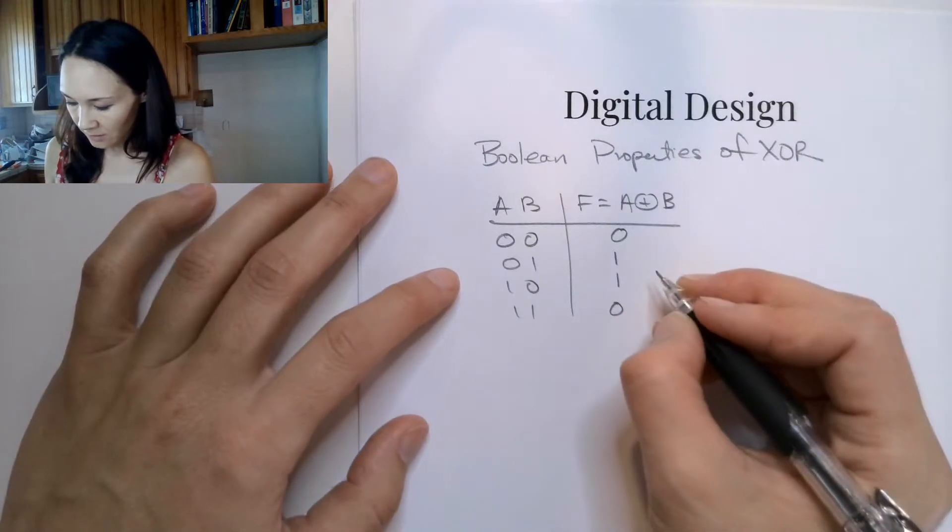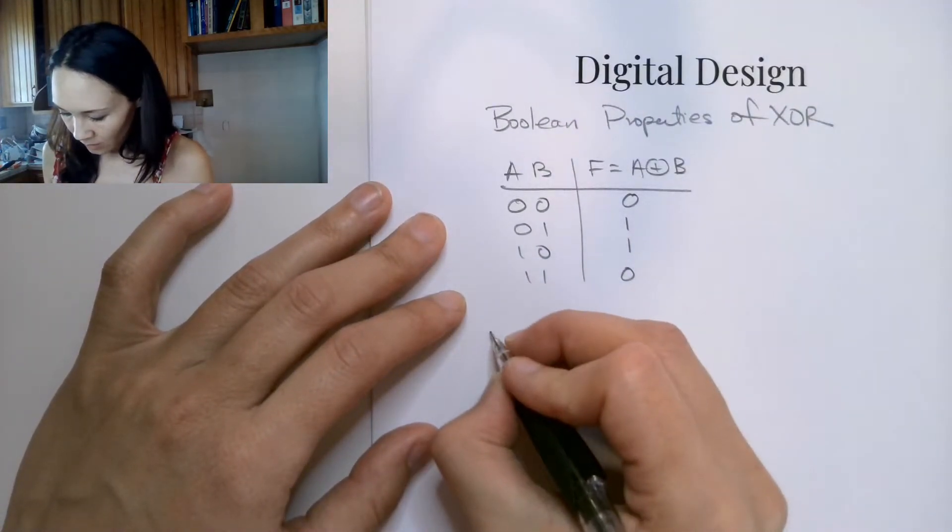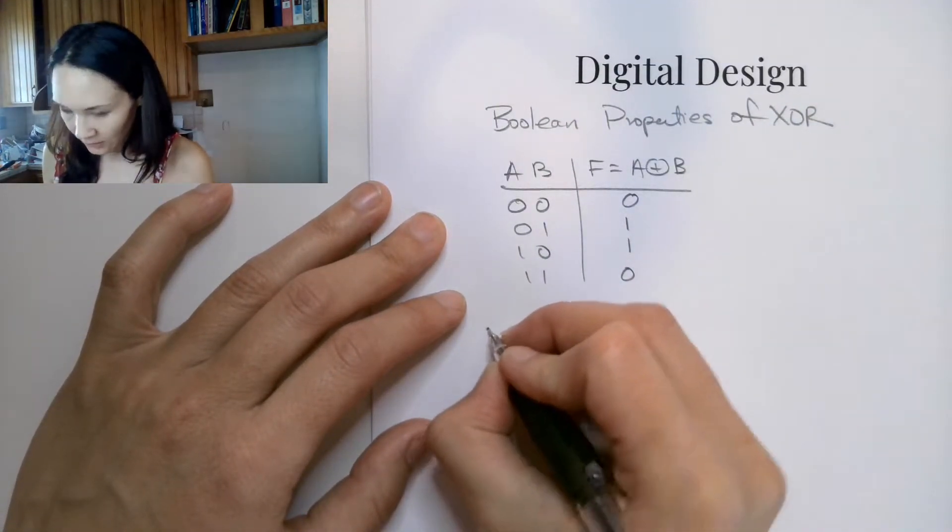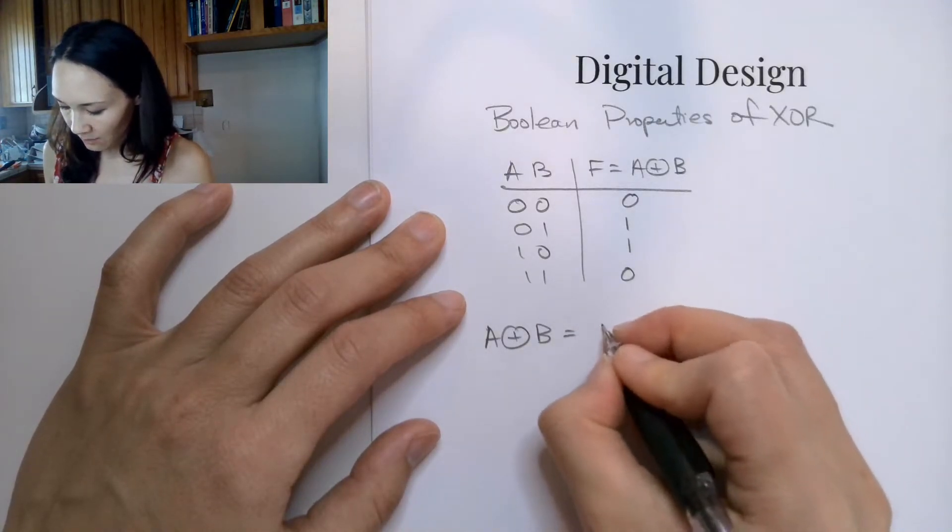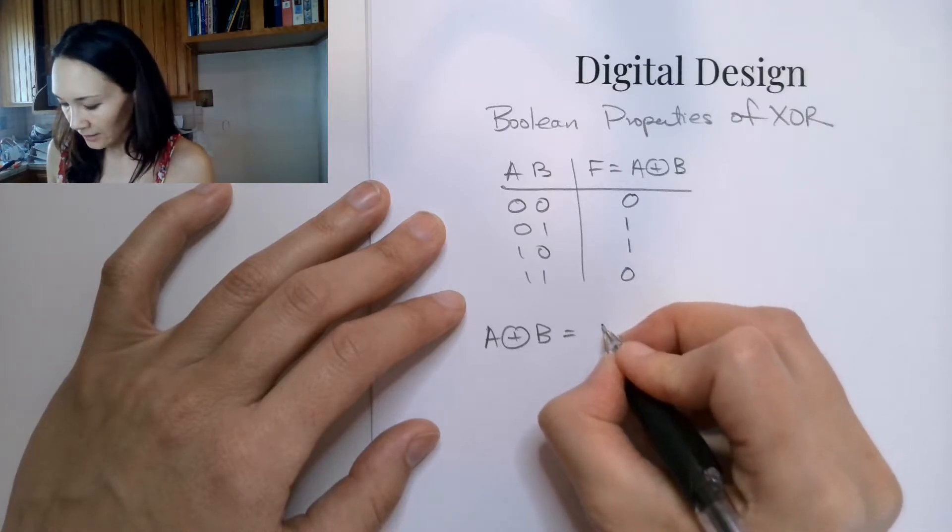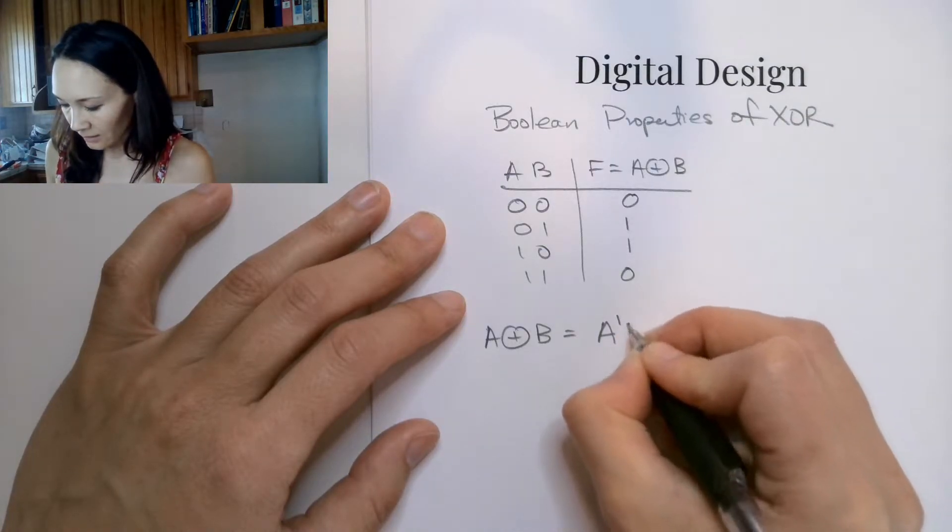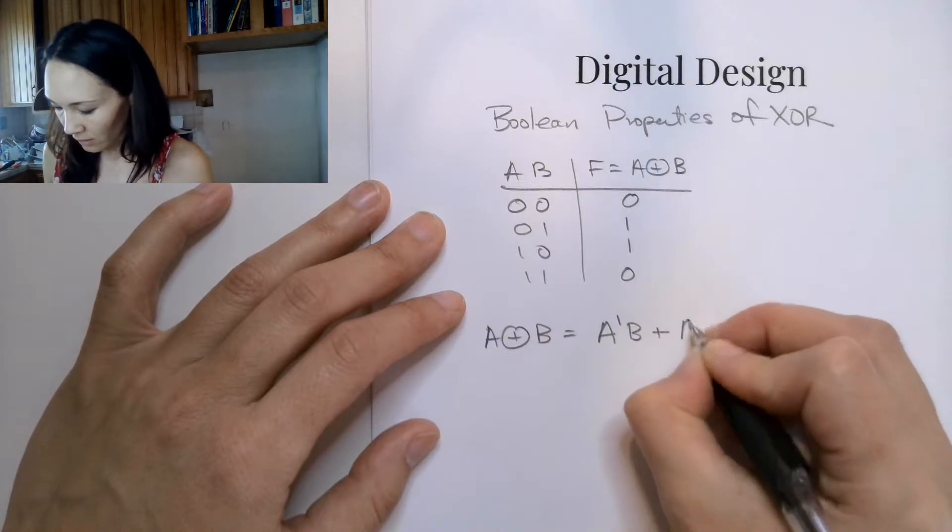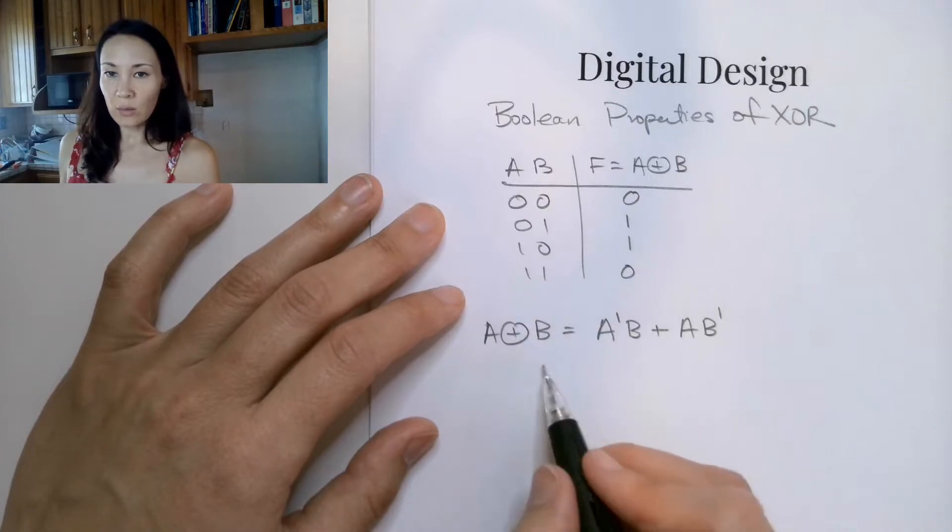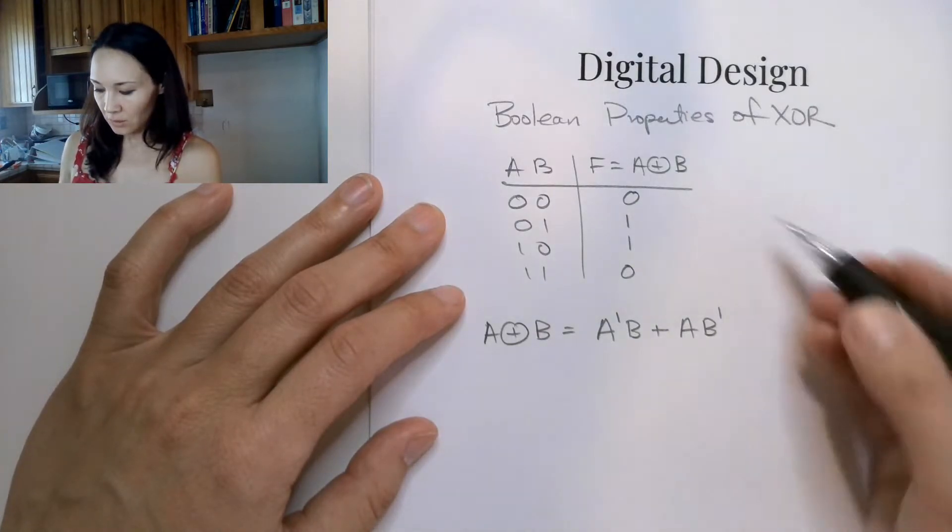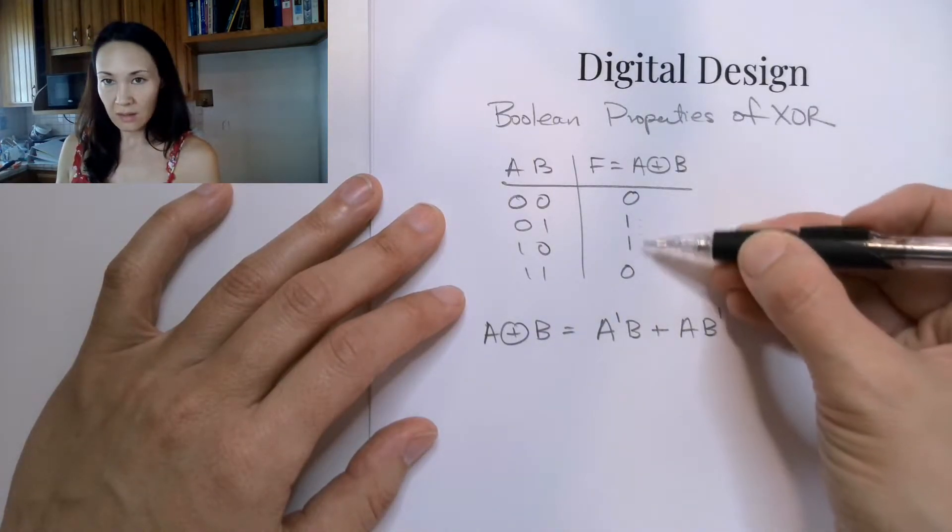Okay, so that means that the definition of XOR, A XOR B, can be written in terms of ands and ors. It's A naught B or A B naught. And this function here is logically equivalent to this one because this is only true when our inputs are different.